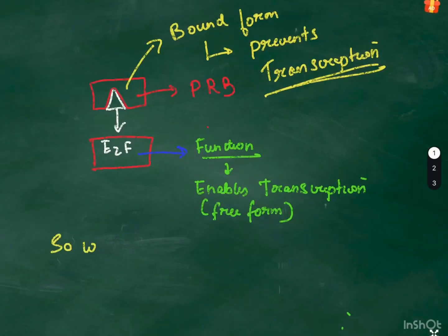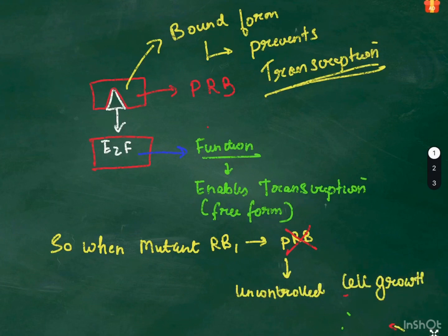When there is a mutation in the RB1 gene, the RB protein would not be formed. Due to which there will be uncontrolled division and growth of cells, which leads to tumor growth and tumorigenesis.